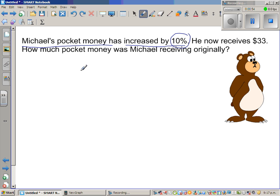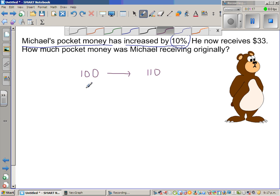I'll write this as a ratio. Ultimately this will become like this: if he was getting $100, now he is getting $110. So if he was getting $X, I don't know what that X is. Let me, instead of X, say pocket money P. If it was P, he is getting $33 now.